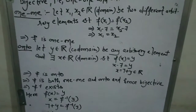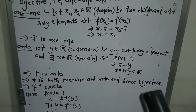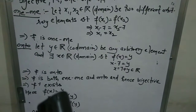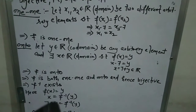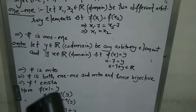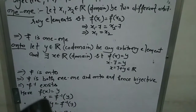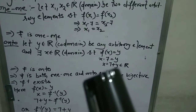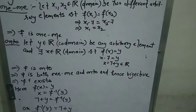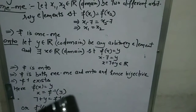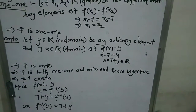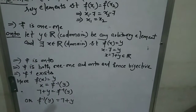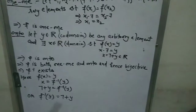So the function is one-one and onto, therefore it is bijective, and since the function is bijective, its inverse exists. Now to find the inverse: f(x) = y, and x = f⁻¹(y). The value of x we found was y + 7, so f⁻¹(y) = y + 7, or we can say f⁻¹(y) = 7 + y. With this method we can find the inverse of the function.